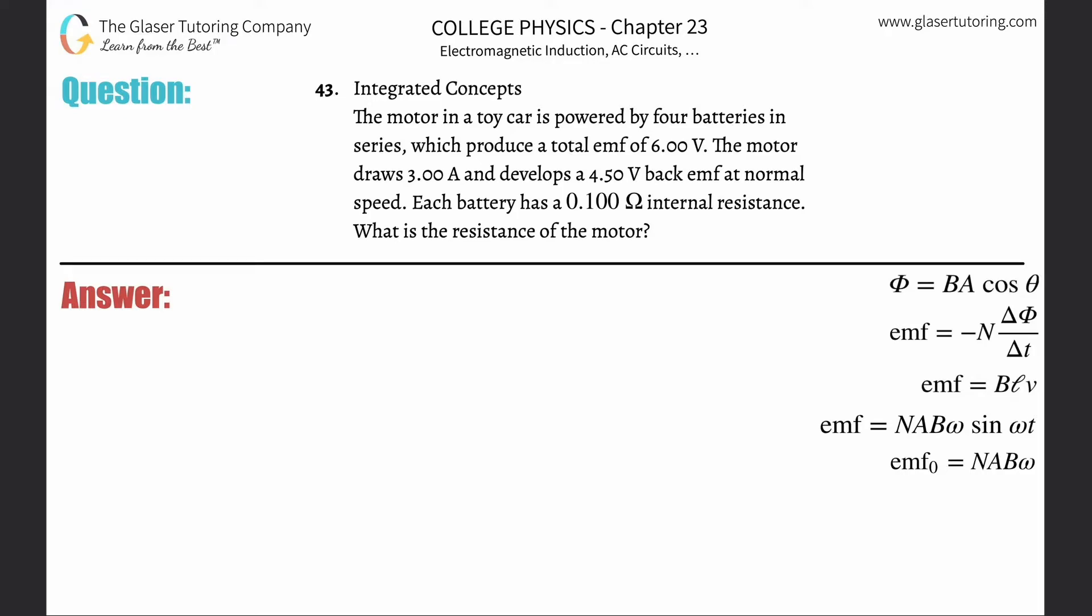Number 43, integrated concepts. The motor in a toy car is powered by four batteries in series which produce a total emf of six volts. The motor draws three amps and develops a 4.5 volt back emf at normal speed.